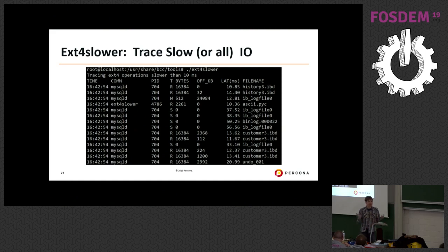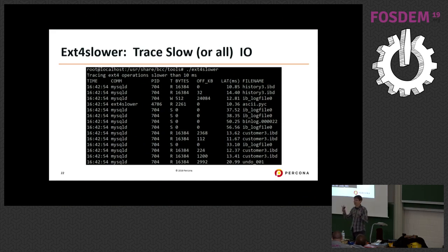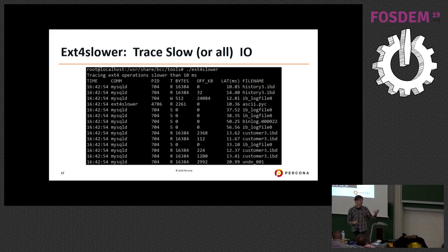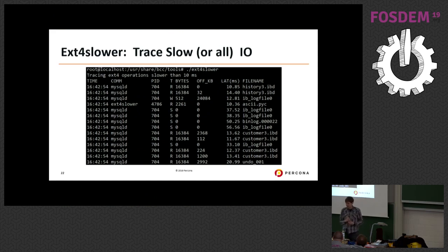Another related tool: if you don't want to trace everything or build a histogram, you can use a tool to understand which I/O operations don't meet your service level objective. You can say 'show me all operations that took more than 10 milliseconds' — you can put any number you want — and it shows you exactly which requests took that long.